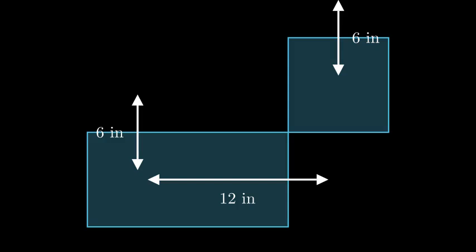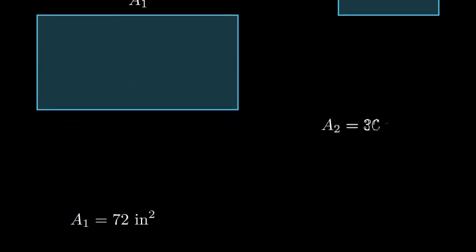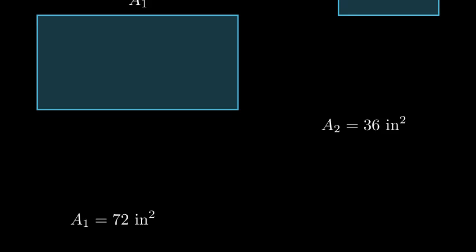To find the centroid, let's break this into two rectangles. We'll call the bottom rectangle A1 and the top rectangle A2. The area of A1 is 72 square inches, and the area of A2 is 36 square inches.